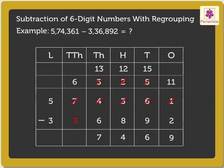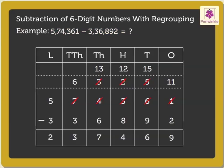Now, 6 minus 3 is equal to 3. Finally, 5 minus 3 gives 2. Thus, 5,74,361 minus 3,36,892 is equal to 2,37,469.